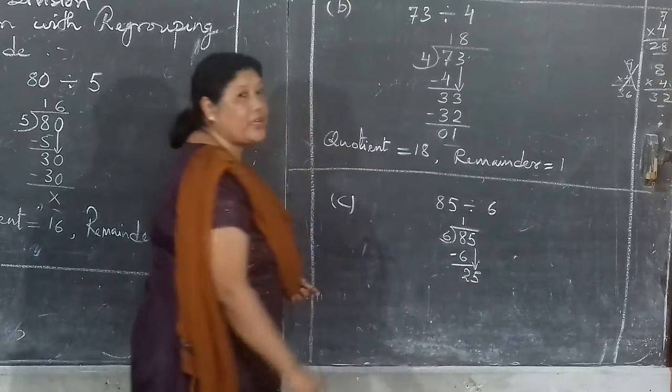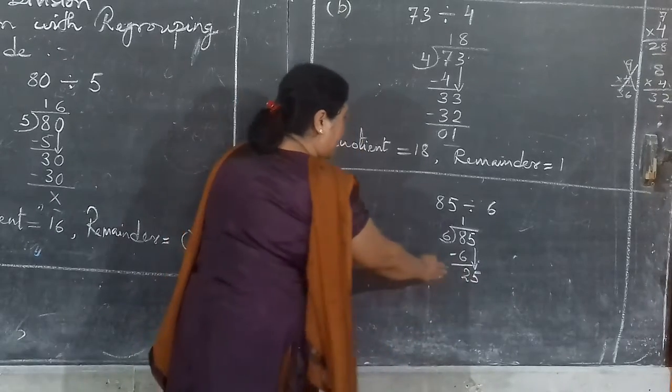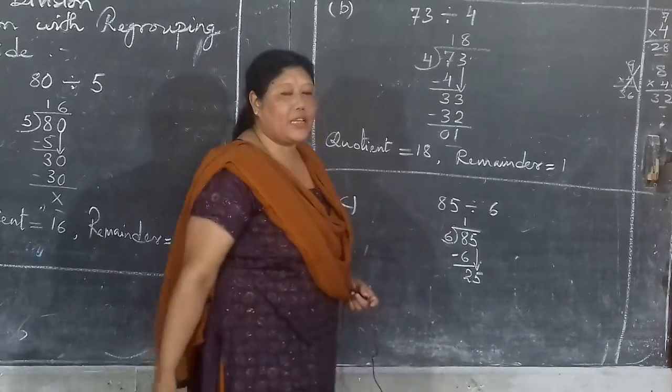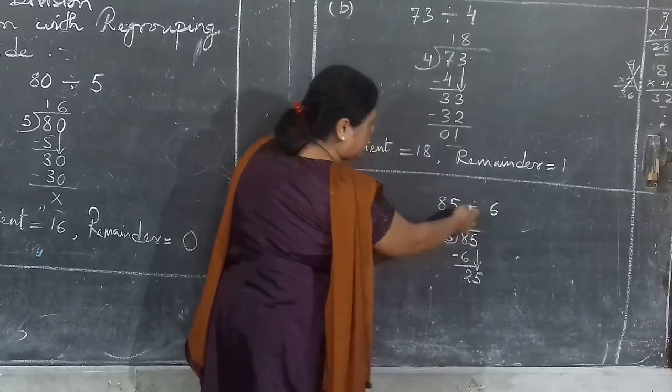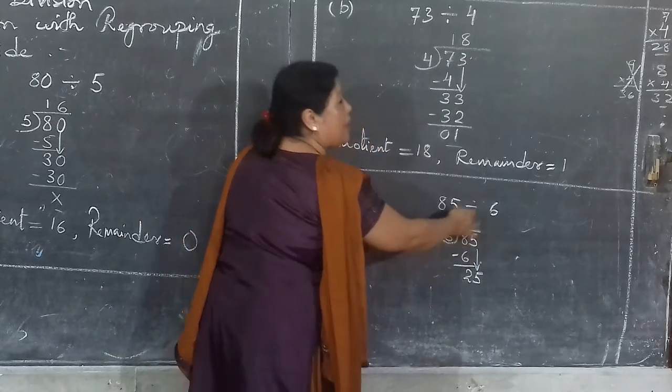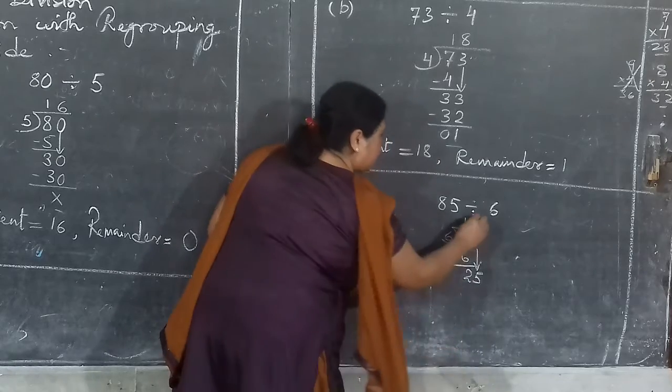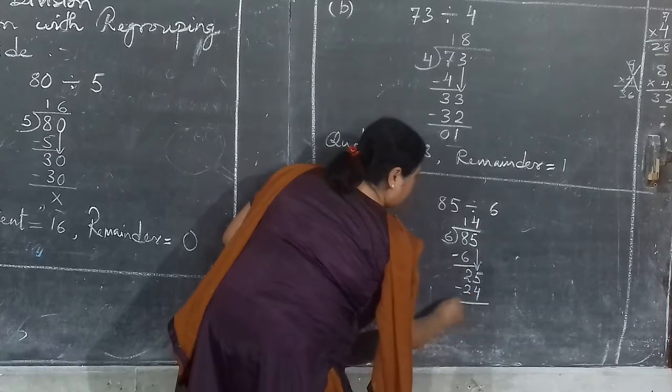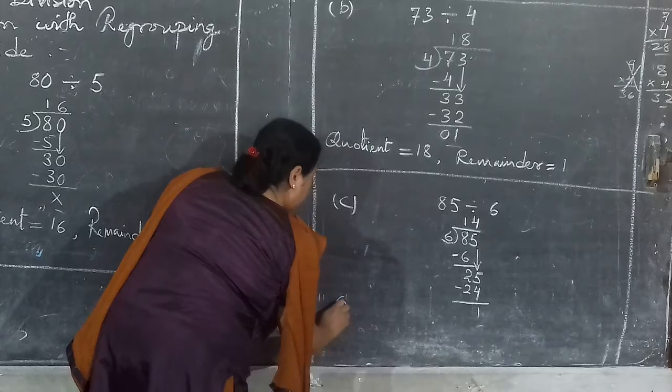It became 25, now it made a group. Now you can divide. 6 how much? Keep on saying 6's table: 6 twos are 12, 6 threes are 18, 6 fours are 24, 6 fives are 30. 30 is bigger than 25, so it will be 6 fours are 24. 5 minus 4 is 1. Now quotient will be 14 and remainder will be 1.